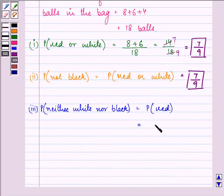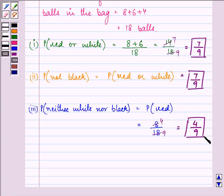So there are in total 8 red balls divided by 18 and hence the answer comes out to be 4 upon 9. So this is the required answer to the last and final part.